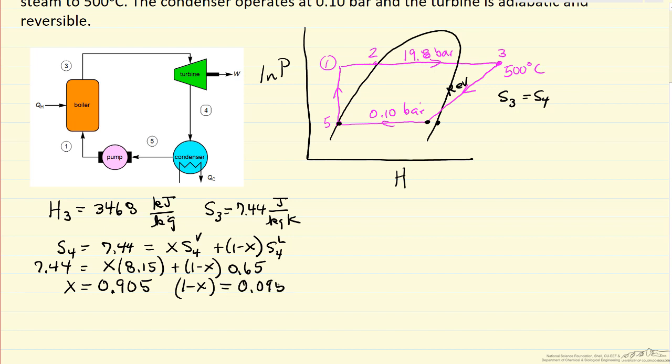Now that I know the vapor fraction, I can determine H4. H4 is calculated the same way as S4: the vapor fraction times the enthalpy of saturated vapor, plus the liquid fraction times the enthalpy of saturated liquid. Looking these values up in the steam table at saturation conditions of 0.10 bar, which corresponds to 46°C, I calculate H4 = 2357 kJ/kg.